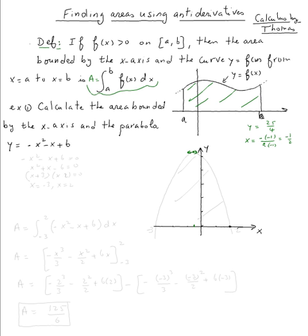The x-intercept, how do we find the x-intercept? We set -x² - x + 6 equal to zero.